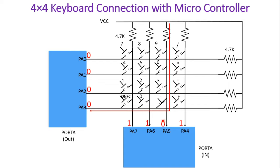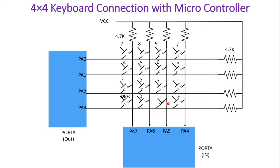Due to this short circuit connection, PA5 will become 0. Once any of PA4, PA5, PA6, PA7 becomes 0 from 1, you need to start scanning to find exactly which key was pressed. First, put 0 on the first row and remaining rows as 1, then check whether PA7 becomes 0. If 0, the 7th key was pressed. Check PA6 — if 0, key 8. If PA5 is 0, key 9. If none found, make the second row 0 and continue the same logic.